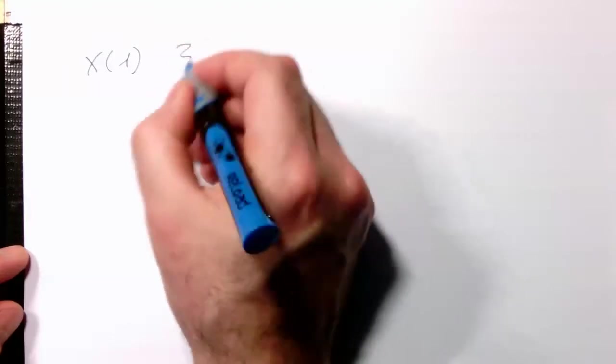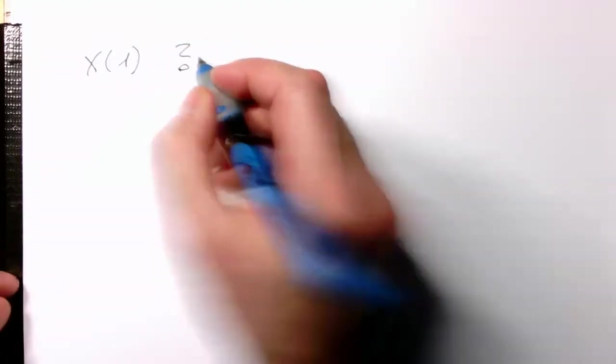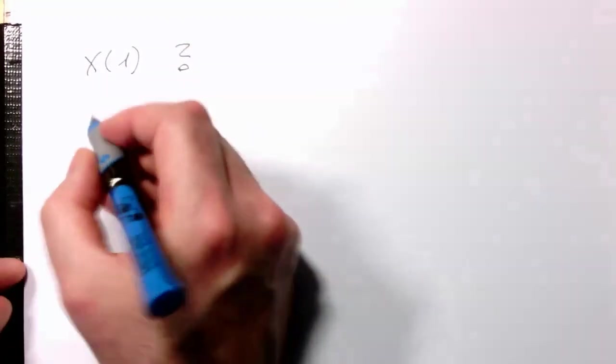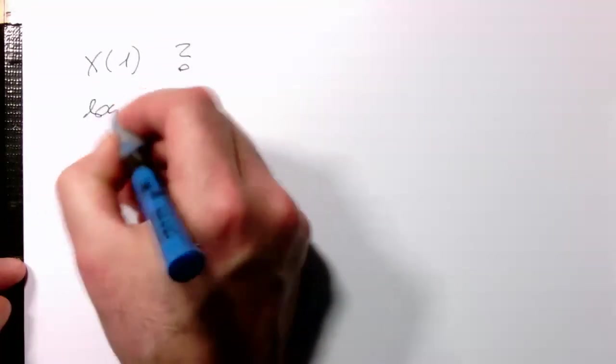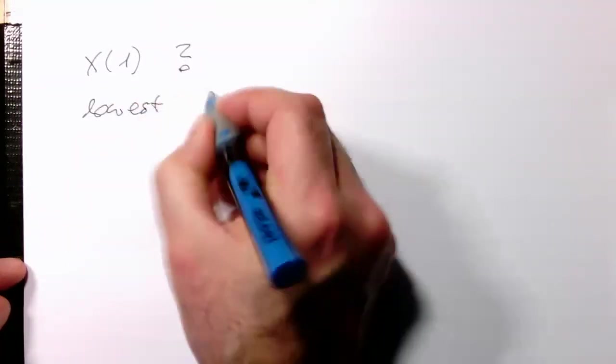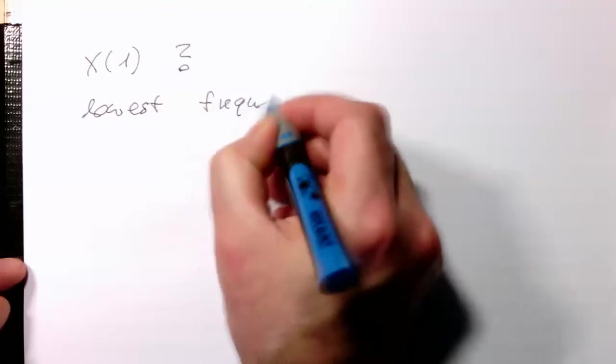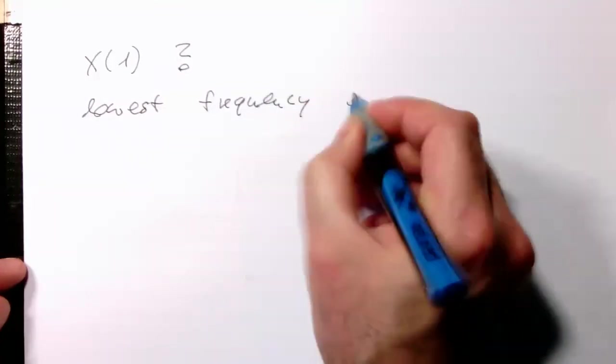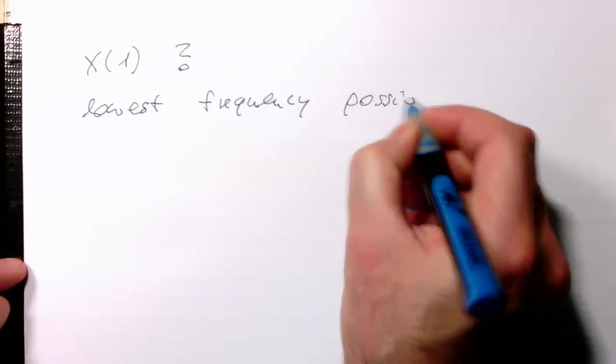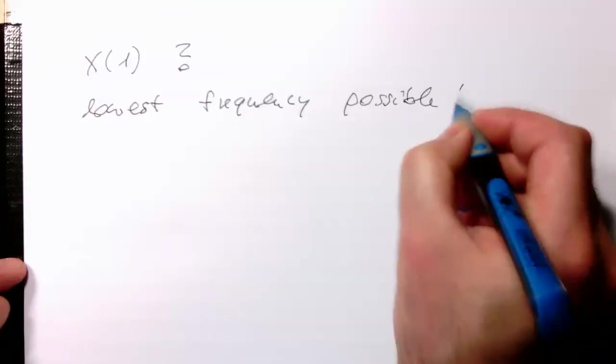Let's have a look at x of 1. What is x of 1? The x of 1 represents the lowest frequency possible. So, why is that?